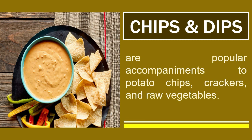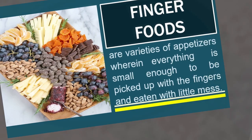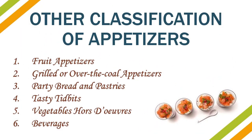You may have noticed that in some restaurants they serve chips together with a dish — that is an example of an appetizer already included in a serving. Finger foods are varieties of appetizers where the only requirement is that everything is kept small enough to be picked up with the fingers and eaten with little mess. We also have other classifications of appetizers: fruit appetizers, grilled or over-the-cold appetizers, bread and pastries, toasted tidbits, vegetable or dough, and beverages.